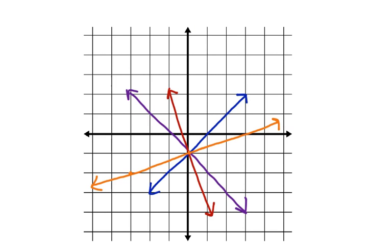This family of lines all has the same y-intercept. Can you write the equation for the orange line in this family of lines? Let's start by identifying the slope of the orange line. We go up one and over three. Rise over run gives a positive slope of one-third for this orange line. And you can see that the y-intercept is negative one.